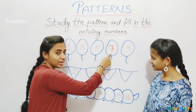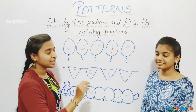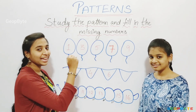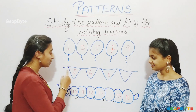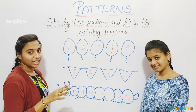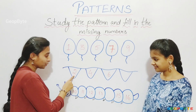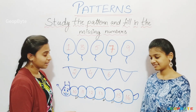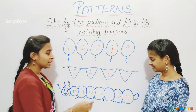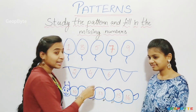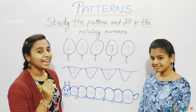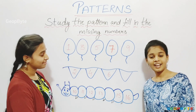7, blank, 8, 9 — so our number is correct. Now let us go to the flags: blank, 1, 2, blank, 3, 4, blank, 5, 6, blank, 7. What comes there after 7? 8. Let us write 8.